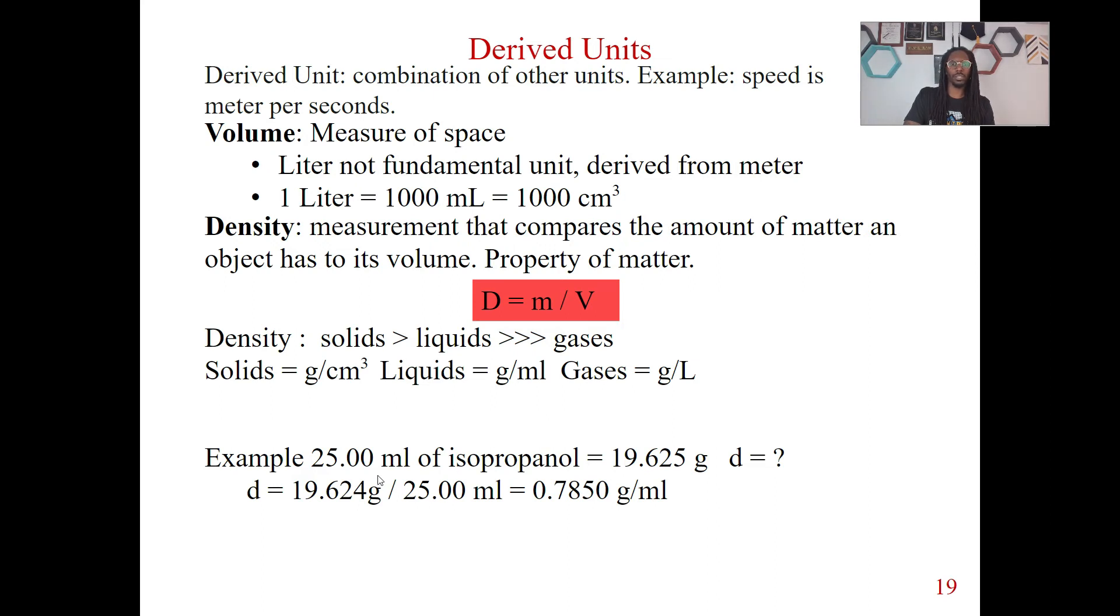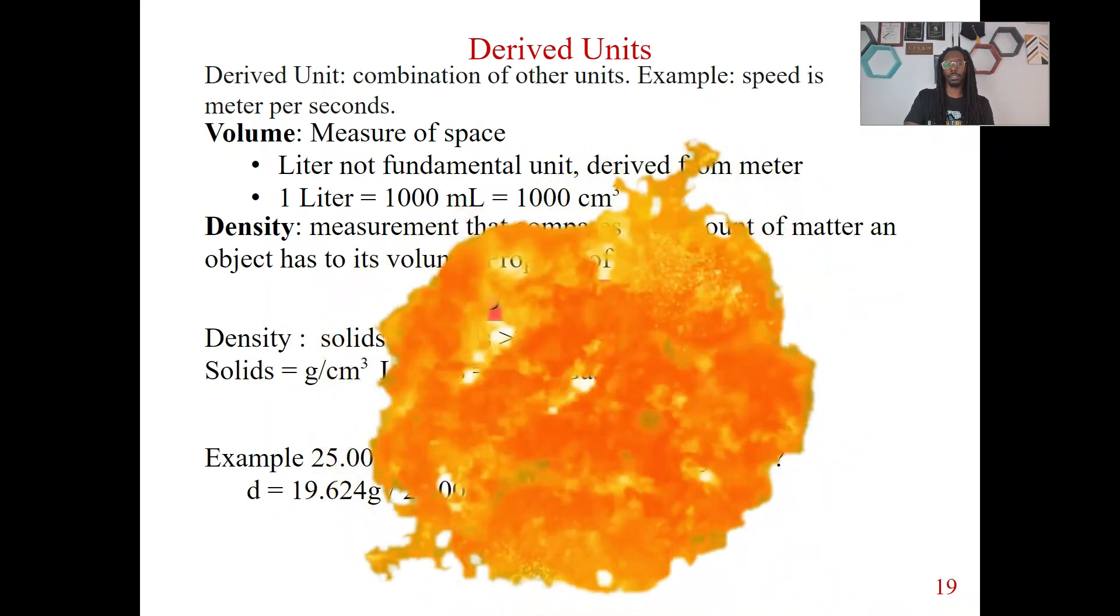So let's do a quick example. If we got 25 milliliters of isopropanol, and we know that our mass for this is going to be 19.625 grams, what's the density of this? So basically, you're going to take your mass, 19.62 grams, divide by your volume, 25 milliliters. And this is going to give you 19 divided by 25, 0.7850 grams per milliliter.